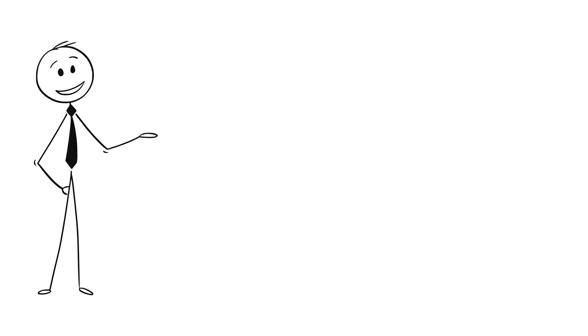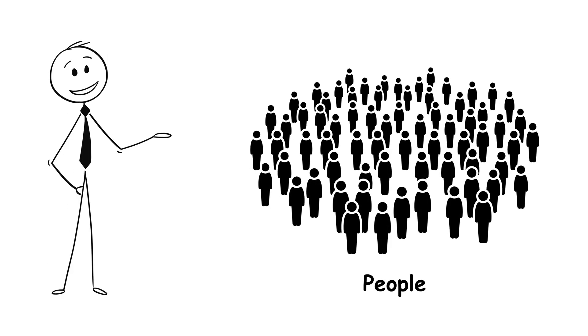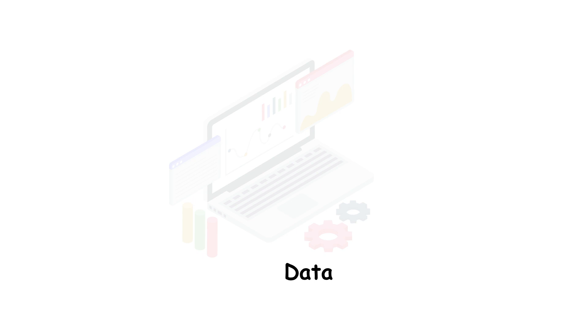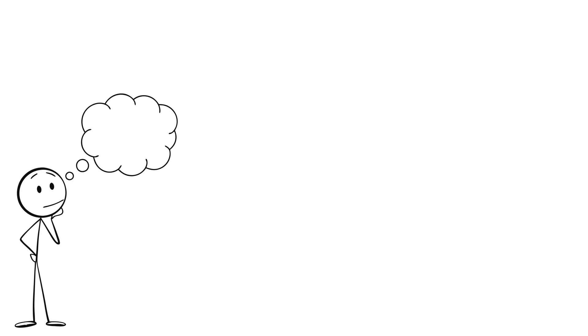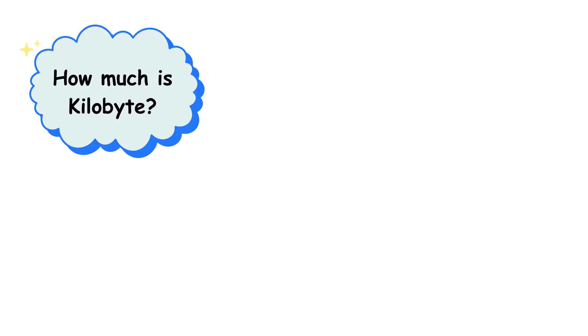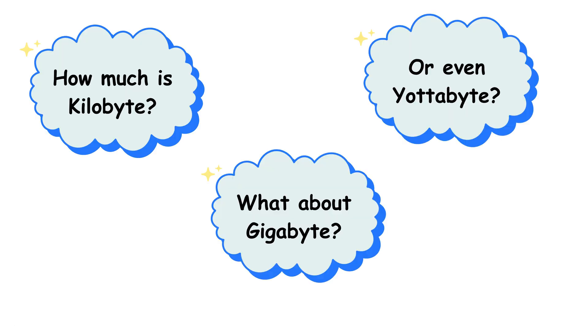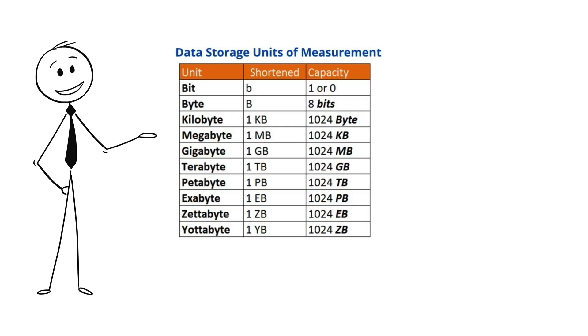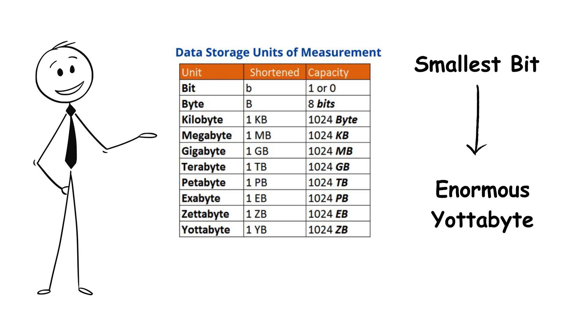Let's talk about something we use every single day, but most people barely understand: digital storage units. Everything you see on your phone, your laptop, or the internet — every message, video, and photo — is stored as data. But have you ever wondered what that data actually means? How much is a kilobyte? What about a gigabyte, or even a yottabyte? Let's break down every single digital storage unit, from the smallest bit to the enormous yottabyte, in a simple and detailed way.